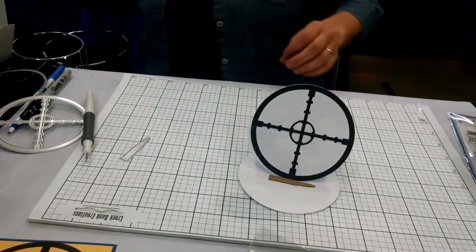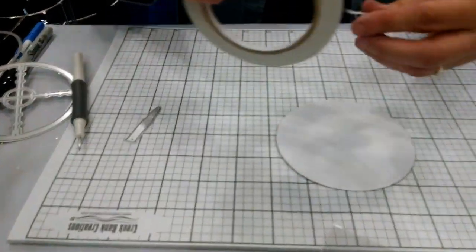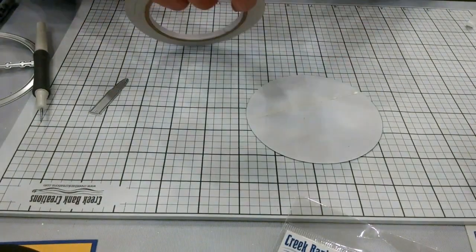And for that I'm going to use Creek Bank creation super tacky tape, and I'm going to use the quarter inch tape, and all I want to do is put adhesive on the bottom.